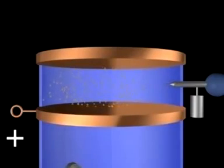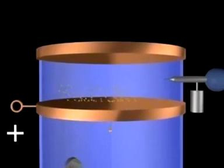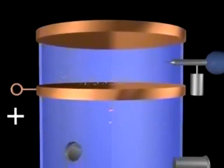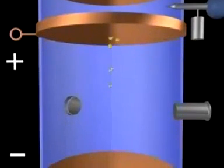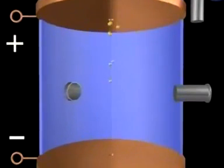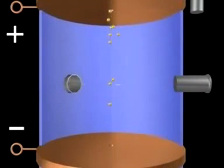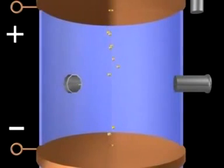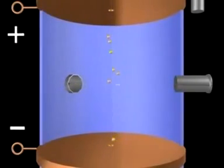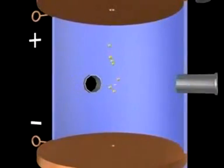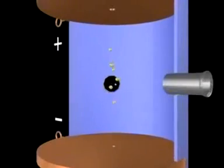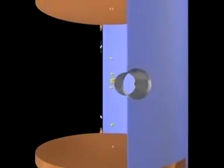He allowed a fine spray of oil to settle through a hole into a chamber where he could observe their fall. The top and bottom of the chamber consisted of electrically charged plates. He introduced a source of X-rays, which can cause creation of charges when they strike matter. Charges produced by the X-rays attach to an oil droplet, producing one or more charges on the droplet.